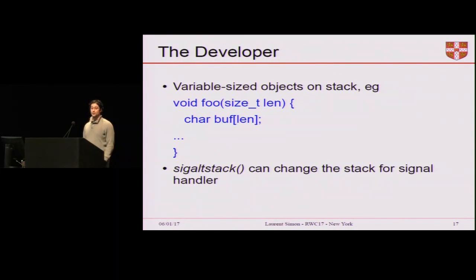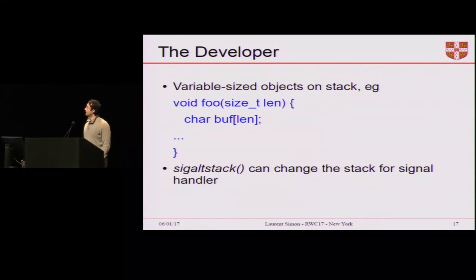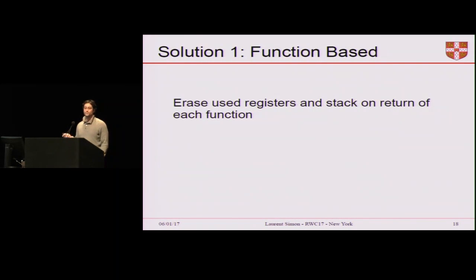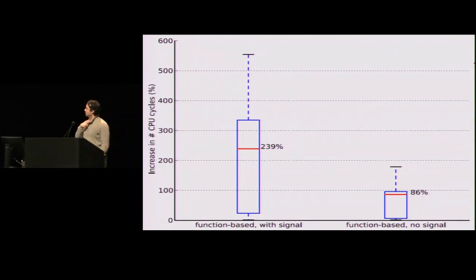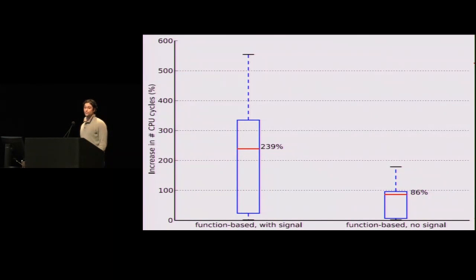We've tried to address all these problems in practice to implement our solution. The first, naive solution works at the function level: we instrument every function in the program — even if not marked as sensitive — and erase the stack and registers used when the function returns. This performs really poorly: with signal support it's about four times as slow as the original program, and without signal support you're still about twice as slow, which is fairly poor.